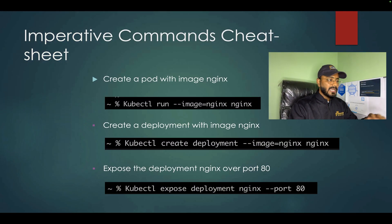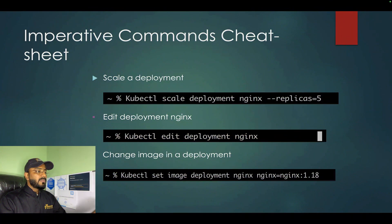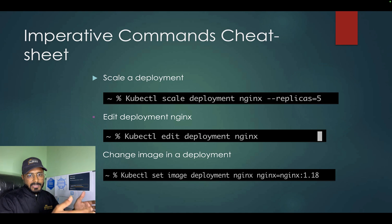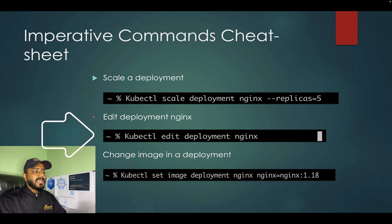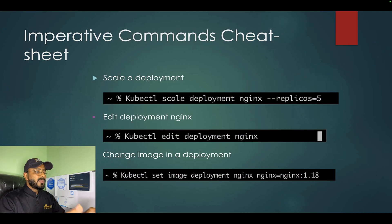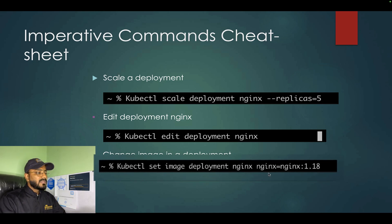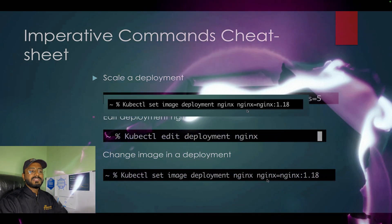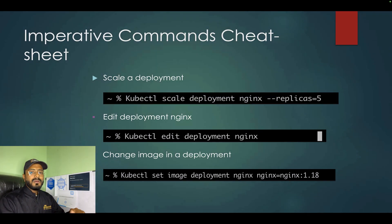You should practice all these commands as much as possible since you need to remember the syntax — though you can also use the --help option. There might be a question to scale a deployment: use kubectl scale deployment <name> --replicas=<desired>. To edit an existing deployment, run kubectl edit deployment nginx, which opens a vim editor where you can make changes and save. To replace an image in a deployment, use: kubectl set image deployment nginx <container-name>=<new-image>.